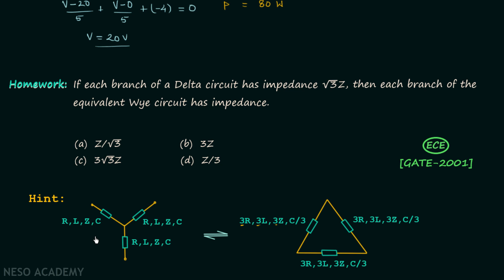There is one exception: for capacitors, if the Y network has value C, the equivalent delta network has value C divided by 3. Conversely, when converting a balanced delta network to a Y network, resistor, inductor, and impedance values reduce by a factor of 3, while capacitor values increase by a factor of 3. Use this point to solve the homework problem.